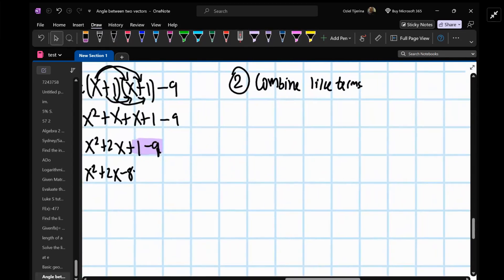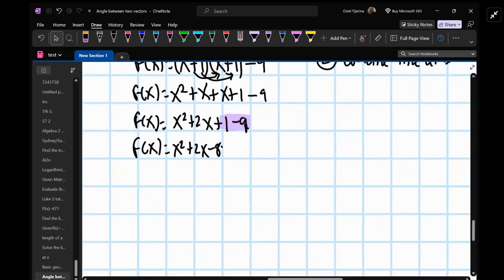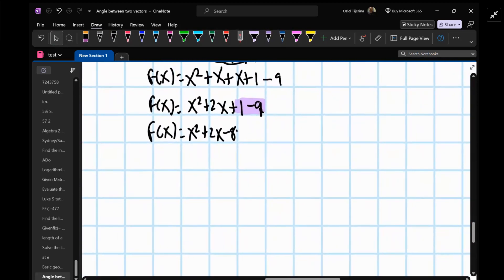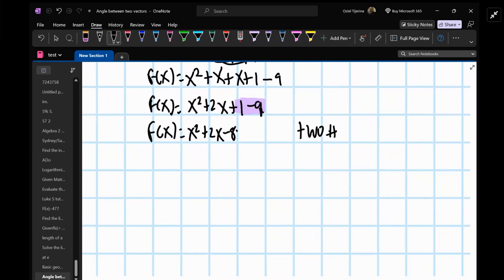Now, you want to try and factor this, right? So the way that we would do this, we want two numbers that multiply to negative 8 and add to 2. So it's always the first term times the last term, which is negative 8, and then add to the middle term. So multiply to negative 8, add to 2.